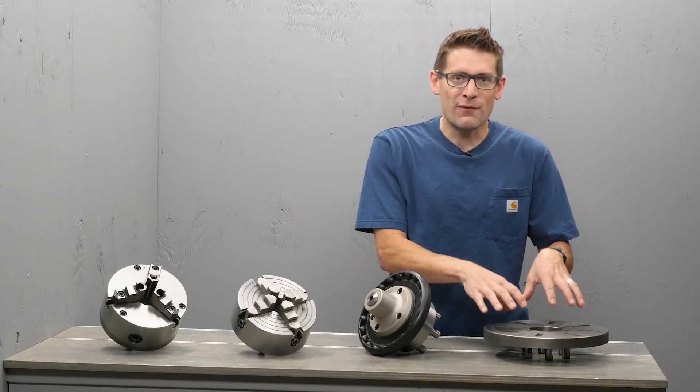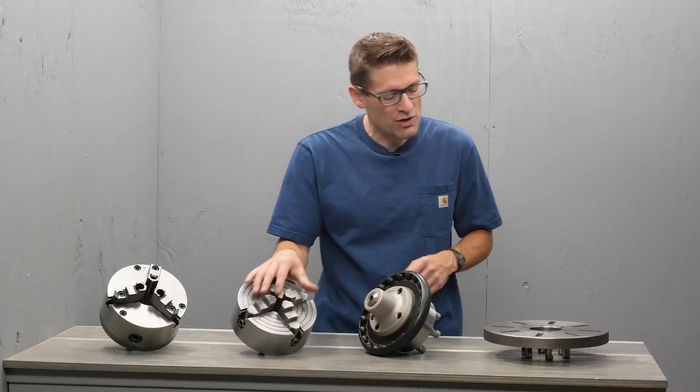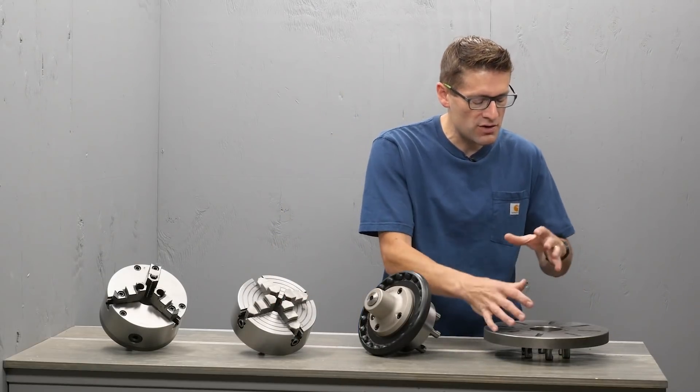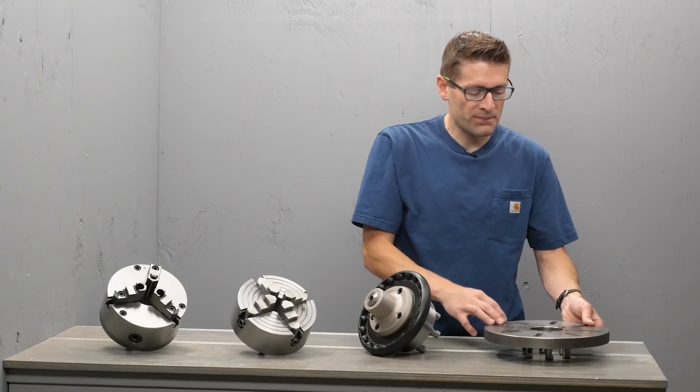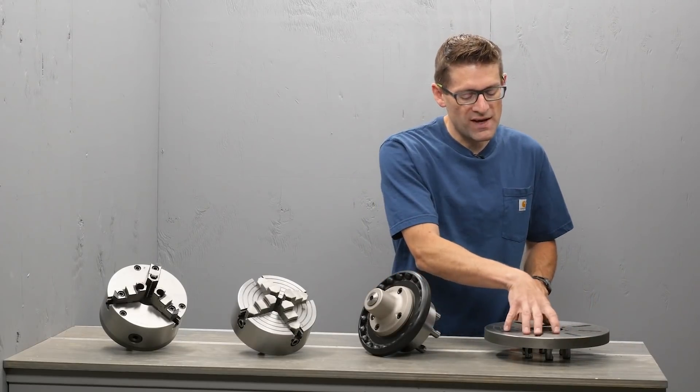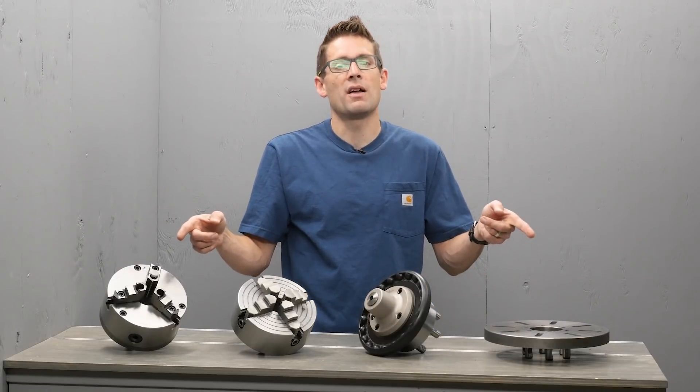Then you've got your faceplate. Faceplate is great for mounting irregular items, kind of like the four jaw chuck. But you can do castings, you can do all sorts of things with these cutouts here, these slots. You can also use this faceplate with a lathe dog to turn between centers on the lathe, which is really important for a lot of different operations.